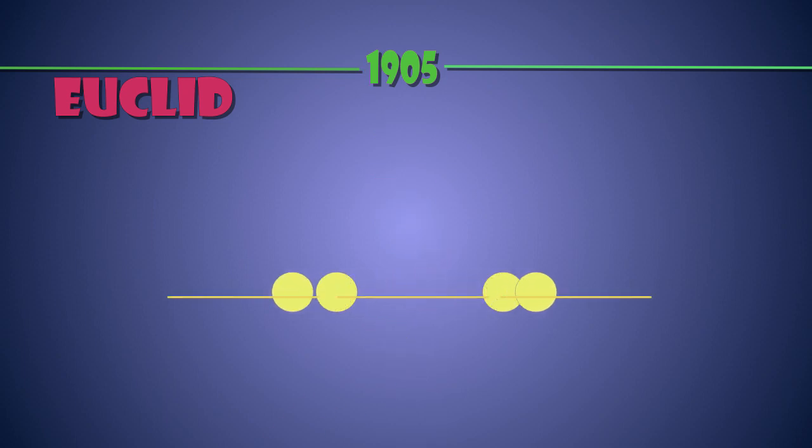A finite line segment can be extended indefinitely. A circle can be drawn from any point and arbitrary radius. All right angles are equal to one another.